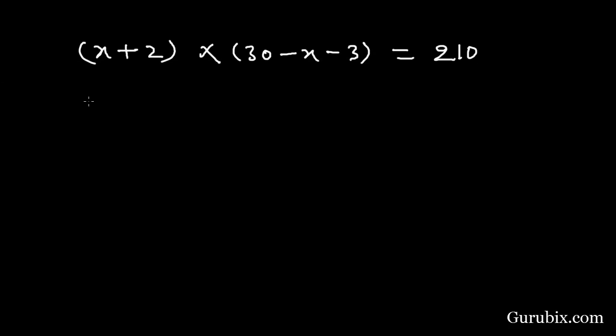So let us do it. Here we have x plus 2, here we have 27 minus x equals to 210. If we further multiply it, this is equal to 27x minus x square plus 54 minus 2x minus 210 equals to 0.